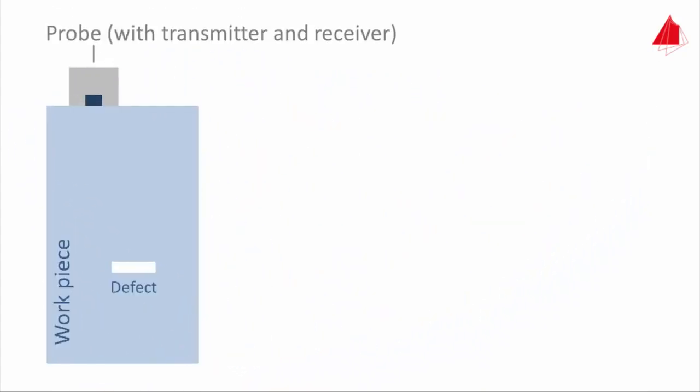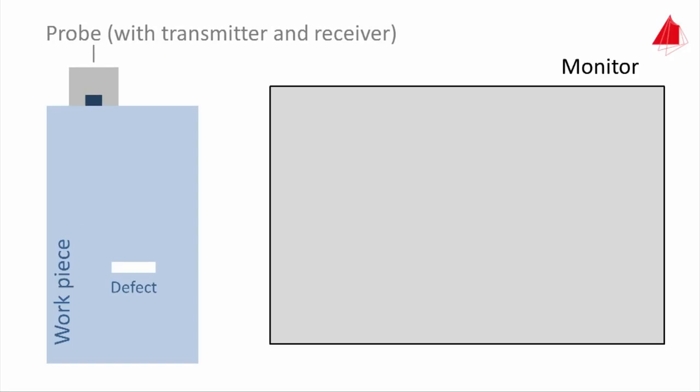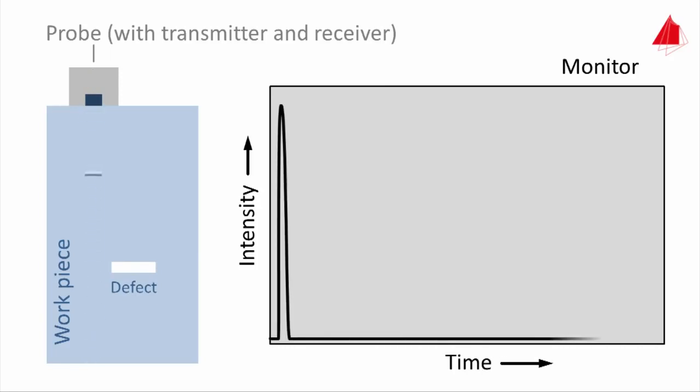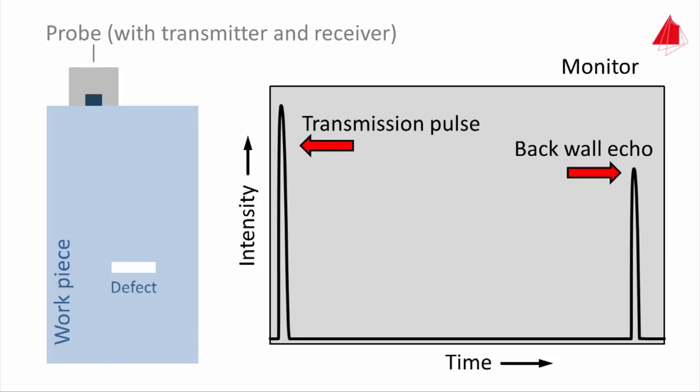In pulse echo mode, a transducer installed in a probe performs both the sending and the receiving of the ultrasonic pulse. On a computer monitor, the intensity is being plotted upwards on the y-axis and the time towards the right on the x-axis. With the probe at a place free from defects, only two signals may be seen on the monitor: the transmission pulse and the echo resulting from the lower surface of the workpiece, termed back wall echo.